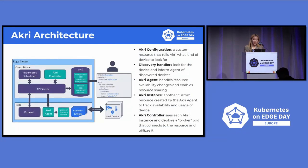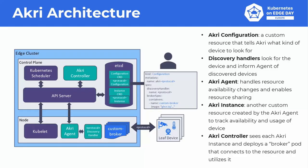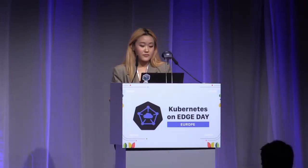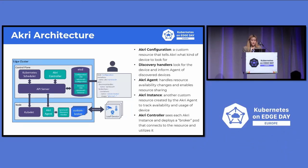Here's a brief overview of how Akri works. There are five main components. First is the Akri configuration, a CRD that tells Akri what kind of device to look for and can deploy a broker for those devices. Then you have the discovery handler, which uses its protocols to find the devices and inform the agent, which runs on all worker nodes. The agent connects to the kubelet via the Kubernetes device plugin framework to expose availability changes to the scheduler. The Akri instance is a CRD created by the agent to track device availability and usage, and the controller, running on the master node, deploys brokers for the devices.